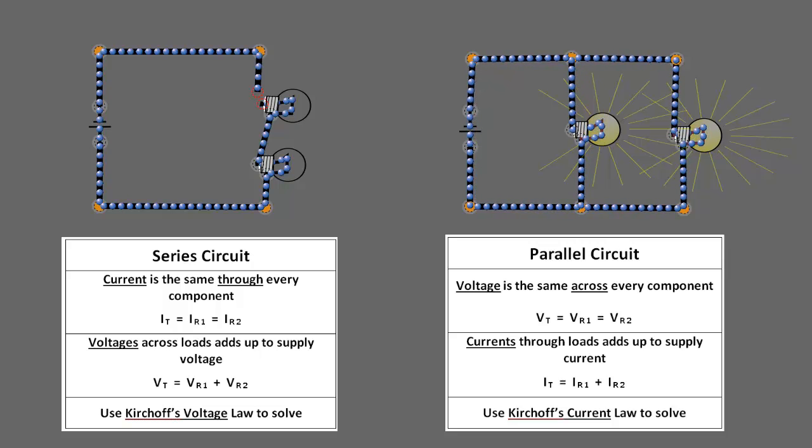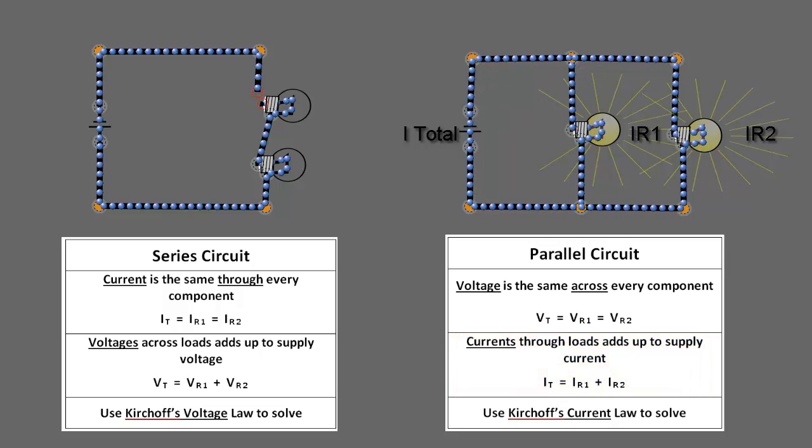Now, to solve for problems involving parallel circuits, we use what's known as Kirchhoff's current law, which is the rule I just explained. I_total equals I_R1 plus I_R2. And really, both these laws, Kirchhoff's voltage law and Kirchhoff's current law, are very intuitive when you think about it.